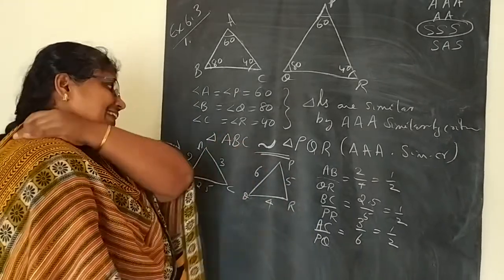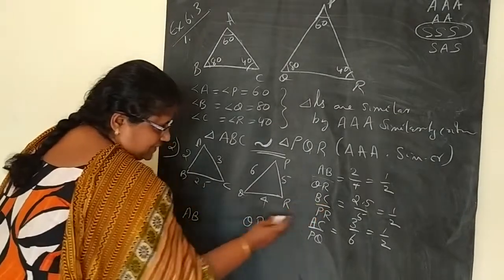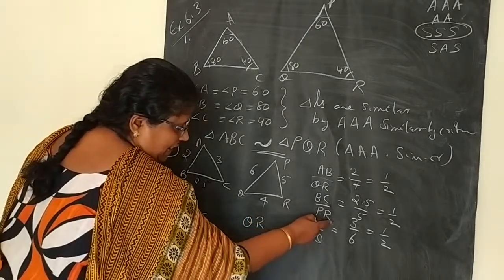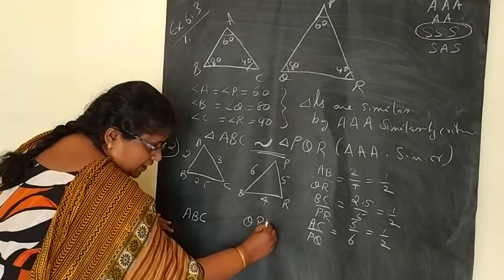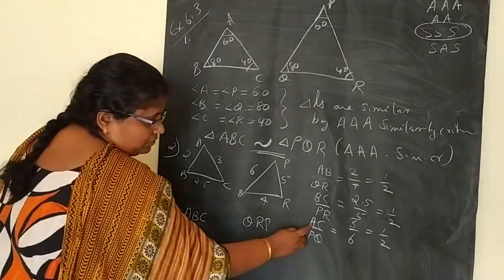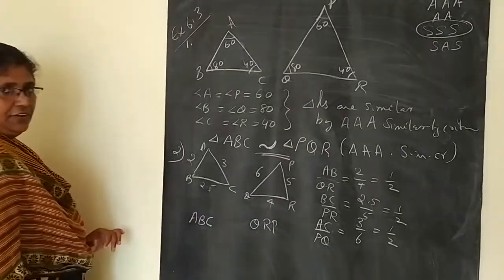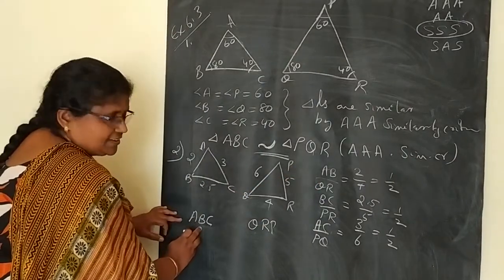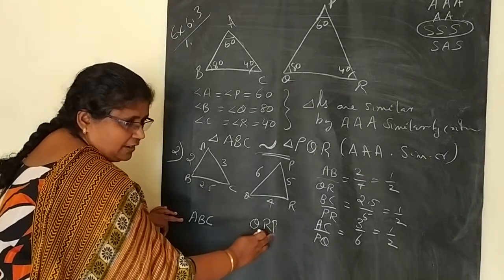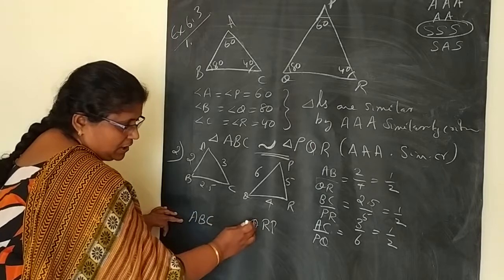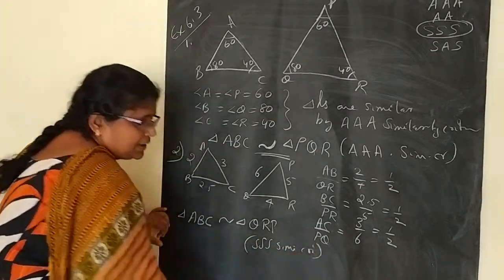But you have to write the name correctly. AB corresponds to QR. BC corresponds to PR, same as RP. AC corresponds to PQ. You have to see the position: AB is first and second letter, QR is first and second letter. BC is second and third letter, PR is second and third letter. AC is first and third letter, PQ is first and third. So these two triangles are similar by SSS similarity criteria.